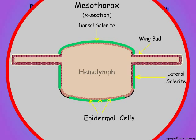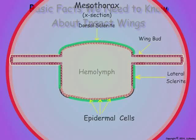The wing buds are continuous with the hemocele and are filled with hemolymph, the insect blood.